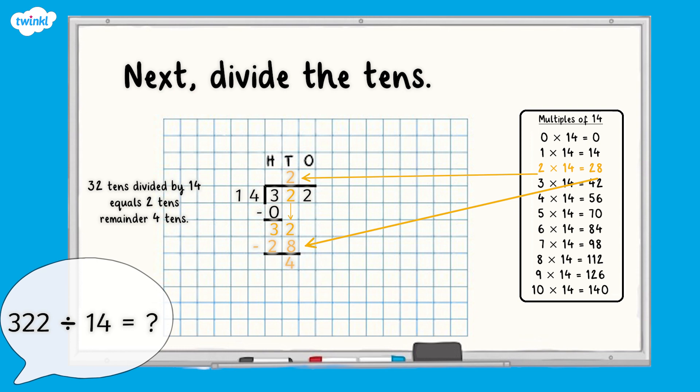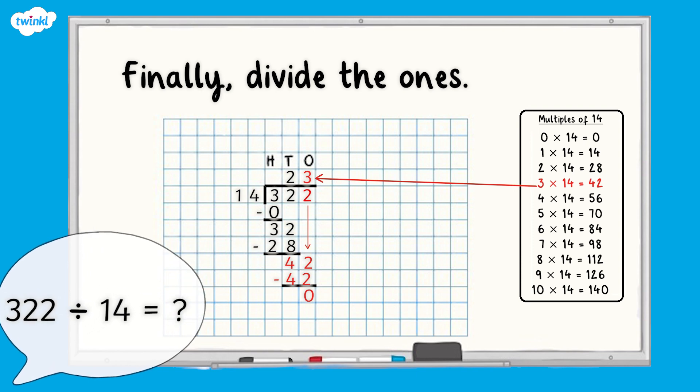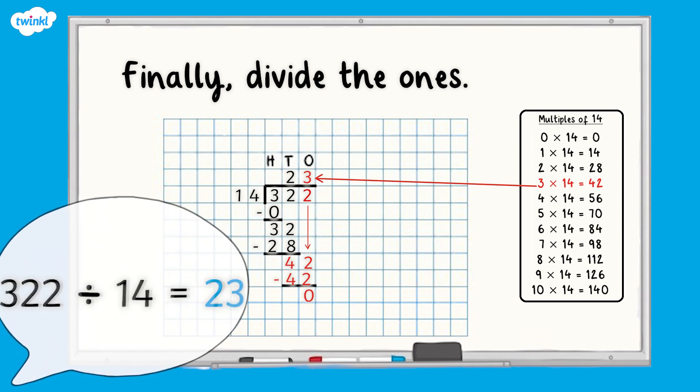The remaining four tens are exchanged for 40 ones and are added to the two ones from 322, giving us 42 ones. Finally, divide the ones. We can see that the 42 ones divided by 14 equals three ones because three lots of 14 equals 42. When we subtract the 42 ones we have divided from the 42 ones we had, we have no remainder. Therefore, 322 divided by 14 equals 23.